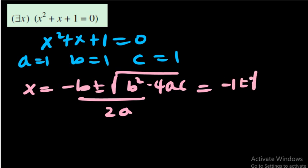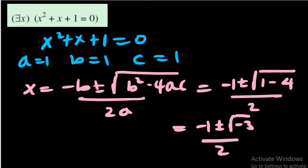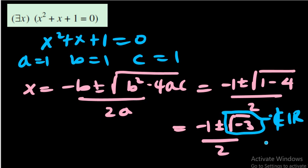Applying the formula: x = (−1 ± √(1 − 4)) / 2 = (−1 ± √(−3)) / 2. Now, the square root of −3 is not a real number. Therefore, this equation has no real solution.